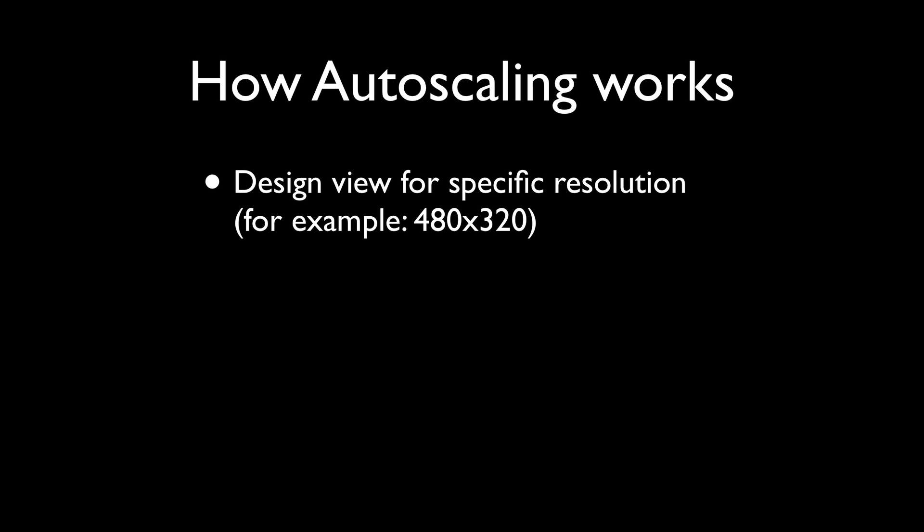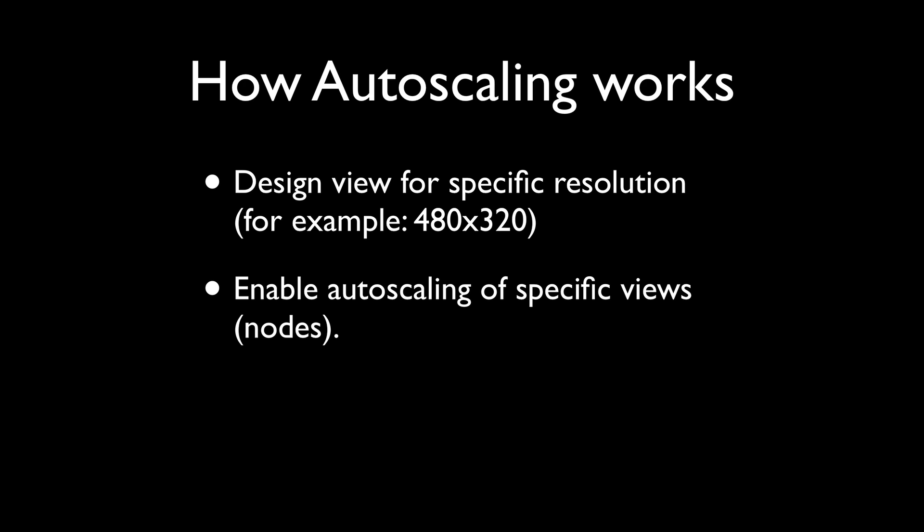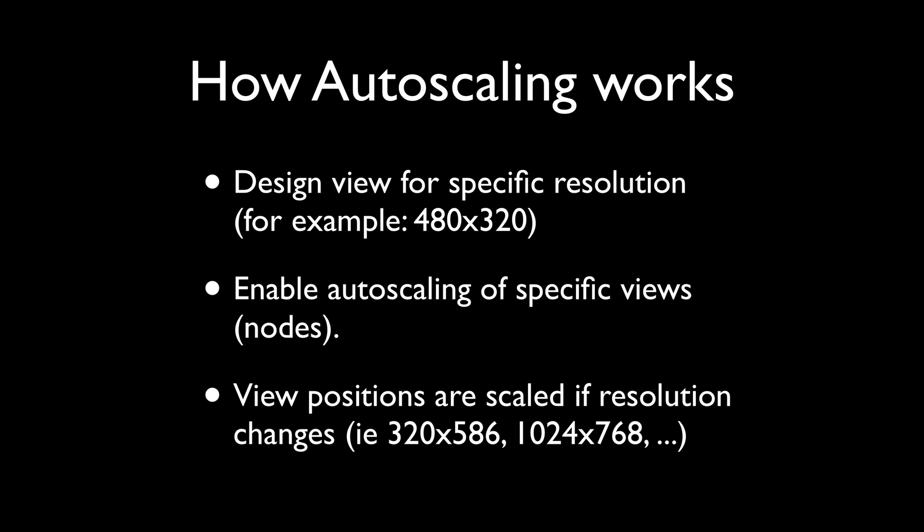Autoscaling in Cobalt Touch works like this. You first design your view for a specific resolution — usually the lowest supported resolution, for example landscape 480x320. Then you enable autoscaling on specific views, which are Cocos nodes. When that's done, the positions of these views are automatically scaled up to the current device's screen resolution. This might be a portrait 320x568 on an iPhone 5, or 1024x768 on an iPad, or any other resolution.